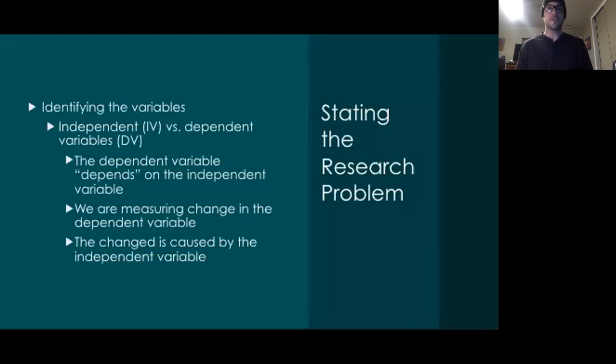The research problem should appear in the introduction before the literature review. In order to state a research problem, the writer needs to identify the variables. So here we have an independent variable versus dependent variable. And this is how I like to think about this. The dependent variable depends on the independent variable. We're often measuring the change in the dependent variable in an experimental study. So the change depends on the independent variable. The change that we're hoping to observe is caused by the independent variable.